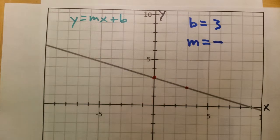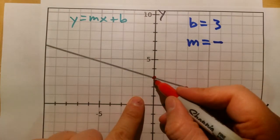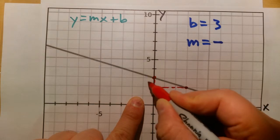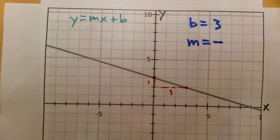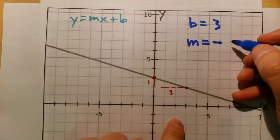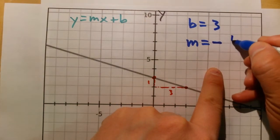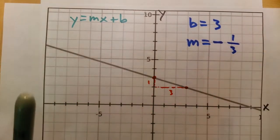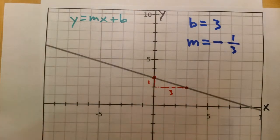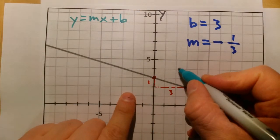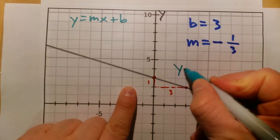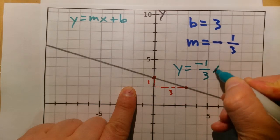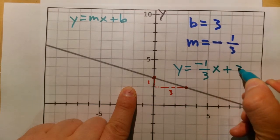Between these two points, the rise is one and the run is three. So our slope is rise over run — rise is negative one and run is three, making the slope negative one over three. So the equation of this line is y equals negative one over three x plus three.